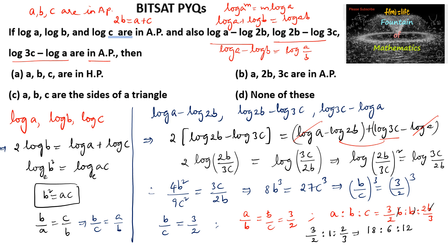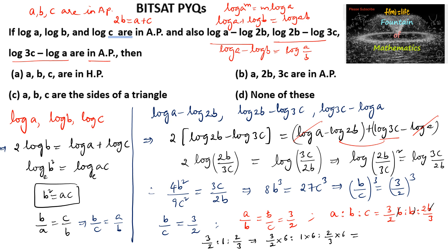So we have 3/2 to 1 to 2/3. The LCM of 2 and 3 is 6. Multiplying: (3/2)×6 to 1×6 to (2/3)×6, which gives 9 to 6 to 4. So 9 to 6 to 4 is the ratio of the three numbers. We can verify that 6 squared equals 9 times 4, which means the numbers A, B, C can form a geometric progression.